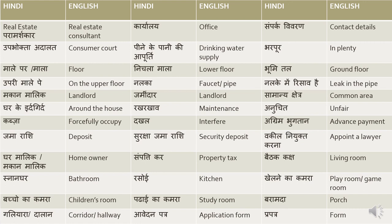Ghar malik or makaan malik means homeowner. Sampatti kar means property tax. Betha kaksh means living room. Snanghar or ghusel khana means bathroom. Rasoi means kitchen. Khehlne ka kamra means playroom or game room. Baccho ka kamra means children's room. Padhai ka kamra means study room. Baramada means porch. Galiyara or dalan means corridor or hallway.